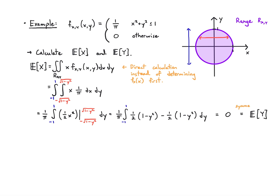Now let's calculate something a little more complicated: E of X times Y. I know from the range that X and Y are dependent — the range is not a rectangle, it's a circle. So depending on the value of X, I restrict the value of Y, and vice versa, which leads to dependence. So I can't factor this generally into the product E[X] times E[Y]. But let's go ahead and work our way to see what happens.